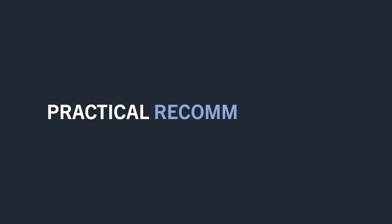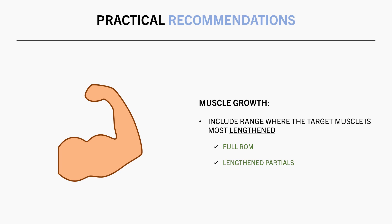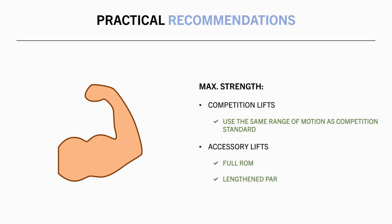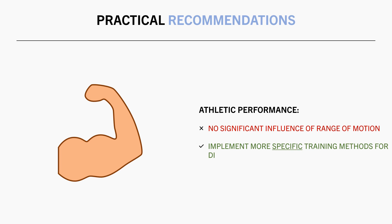Taking all this information into consideration, let's establish some practical recommendations. To maximize muscle growth, we want to make sure to include the range of motion where the target muscle is most lengthened. This can be either by lifting with a full range of motion, or by performing partials in the lengthened range of the exercise. For maximal strength, you would want to lift through the range of motion that is specific to the competition lift. Although for accessory lifts which are intended to hypertrophy the prime mover of a lift, full range of motion or lengthened partials are probably going to be preferable. For athletic performance, the range of motion you lift with doesn't seem to have a significant influence. For more direct transfer to these qualities, you would want to perform more specific training methods such as plyometrics, power, speed and endurance training depending on the outcome you are trying to improve.